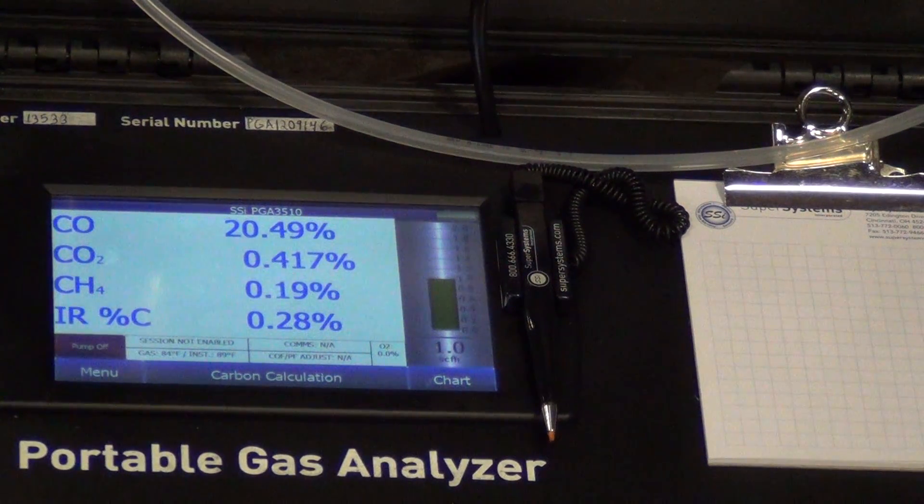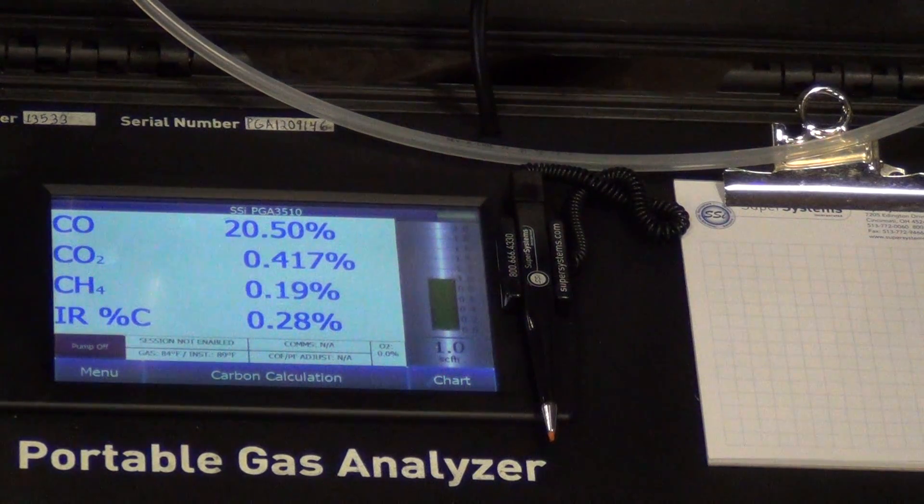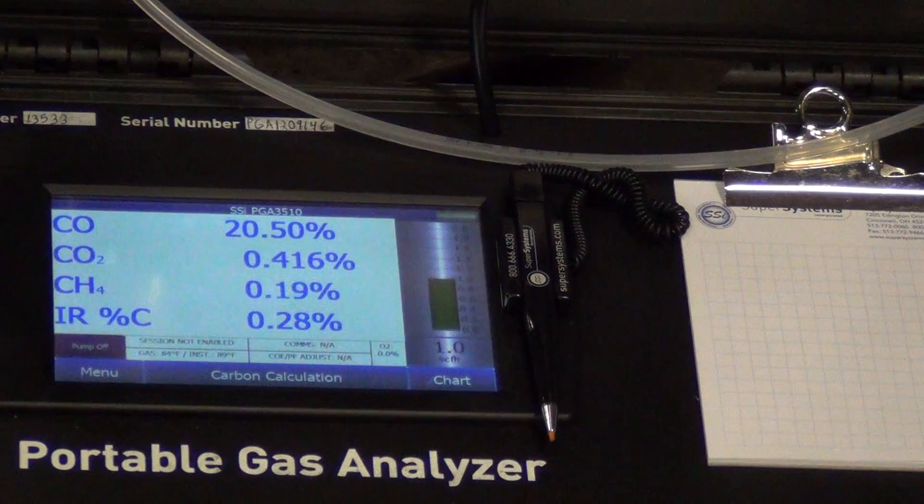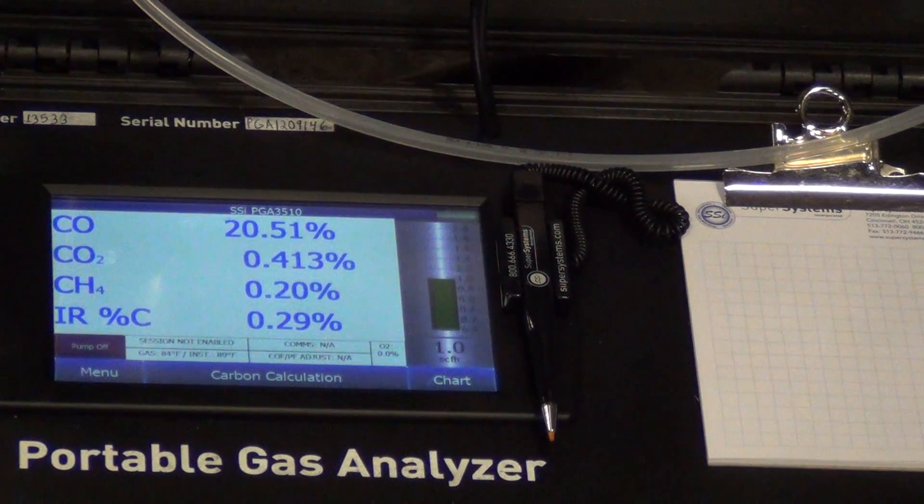Now as you get lower dew point or higher, they tend not to agree as much. Like a 20 dew point might be reading a 0.12 CO2. But around 40 dew point, you typically get a 0.35, 0.45 CO2.